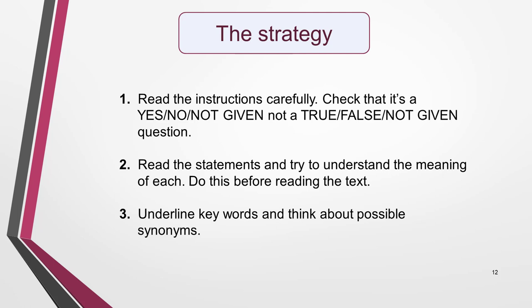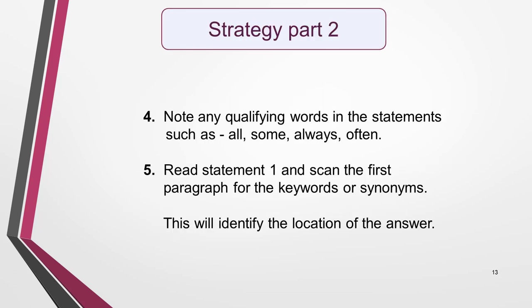Next, we come to the strategy for answering yes, no, not given questions. I'll quickly go through it, then I'll show you how to use it step by step. First, read the instructions carefully. Double check whether it's a yes, no, not given question or a true, false, not given question. Next, read the statements and try to understand the meaning of each — do this before reading the text. Underline key words and have a quick think about possible synonyms that might appear in the text. Also note any qualifying words in the statements such as all, some, always or often. This will make your brain alert for them when you come to scan the text.